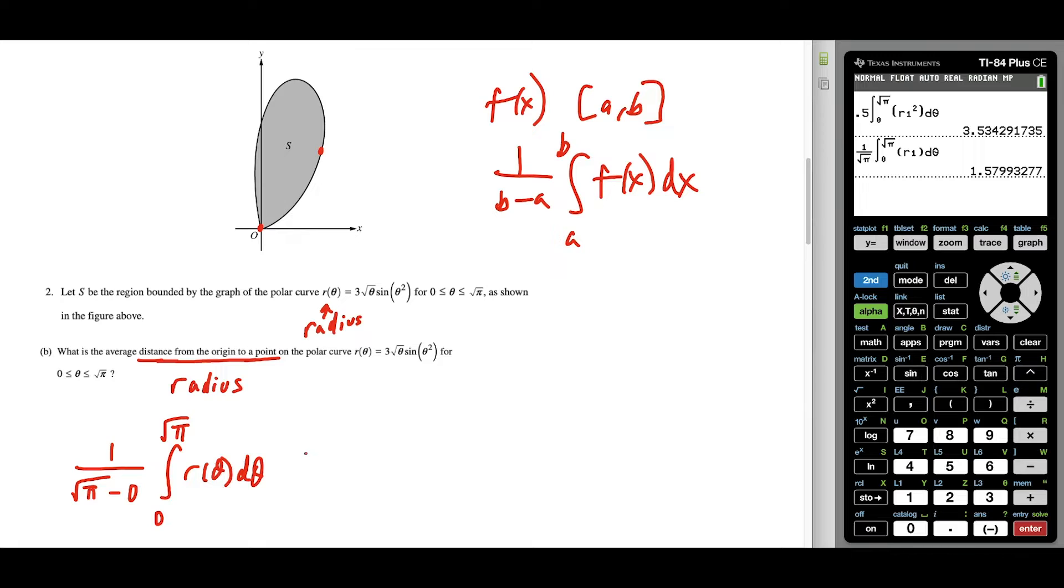So we just press enter here. And now we're just going to round our answer to the nearest, we'll go out to the 10,000 place so that it rounds a little bit nicer, but it's going to be 1.5799. And the next number is a three. So we'll stop here at nine. But this is the average distance from the origin to a point on the curve in region S.